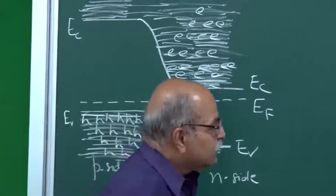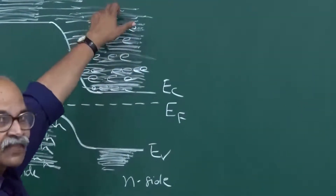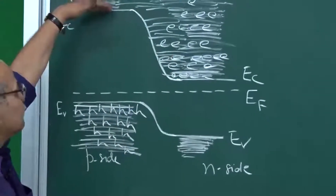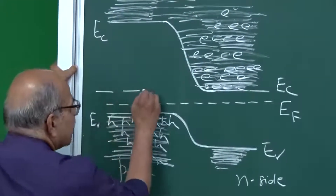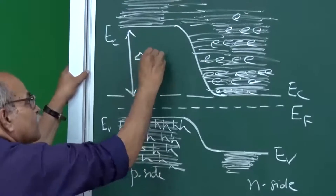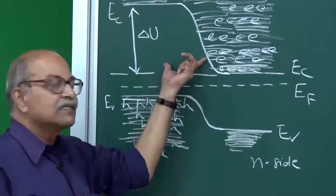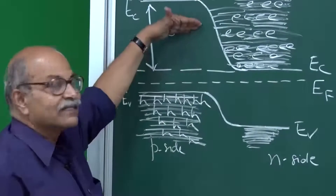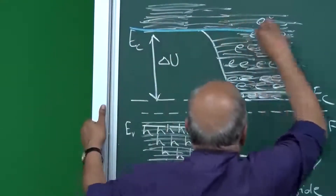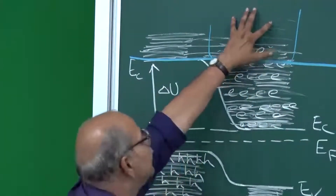If there is a concentration gradient, we have diffusion - but which electrons take part in diffusion? Here, we can determine this because of the energy barrier. You have this energy barrier here, and so these lower-energy electrons cannot diffuse. If these electrons try to go from the n side to the p side crossing the depletion region, there are no quantum states there. Only the electrons which are above this level, in these higher-energy quantum states, will be able to reach the p side.